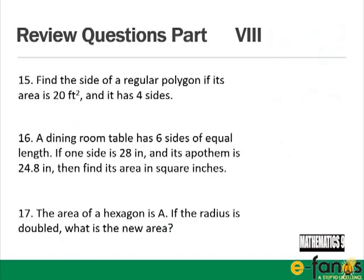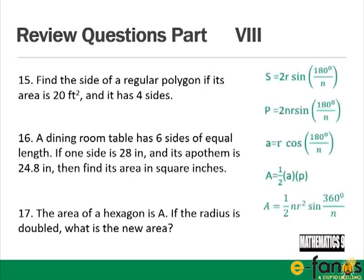Part 8: Find the side of a regular polygon with area 20 square feet and four sides. Answer: the side is √20 feet. A dining room table has six sides of 28 inches each with apothem 24.8 inches; its area is 2083.2 square inches. If the radius of a hexagon is doubled, the new area is 4a square units.